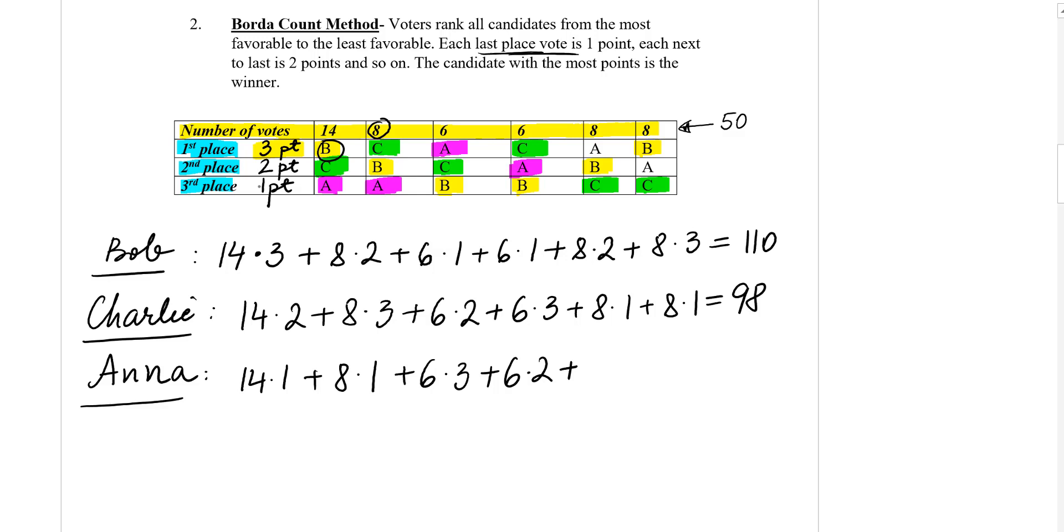Then is on eight votes on first place, which is equivalent to three points, plus eight votes with second place. So the total is 92.